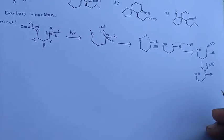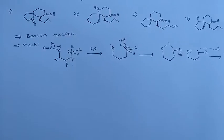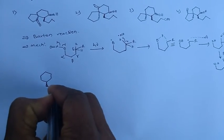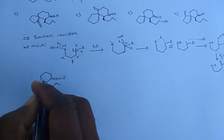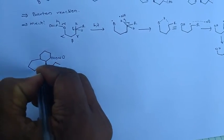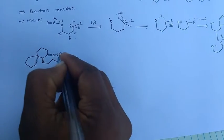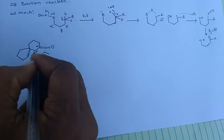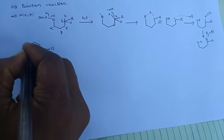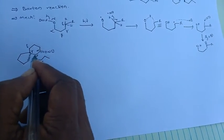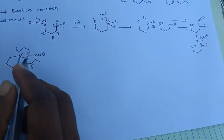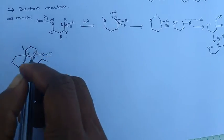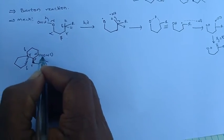This is the Barton reaction. If you observe this mechanism for the given problem, here we have alpha, beta, gamma, delta — and we have another set of chances: alpha, beta, gamma, and delta — and yet another: alpha, beta, gamma, delta. So we have different chances of delta hydrogens to form two possible Barton mechanisms in this reaction.